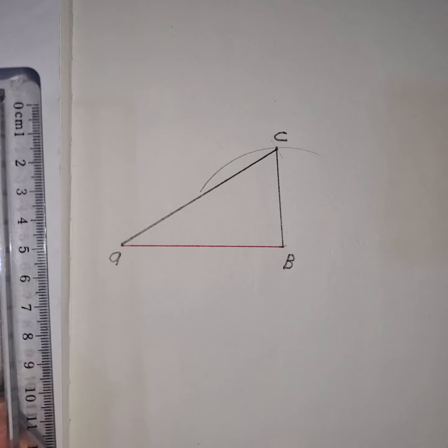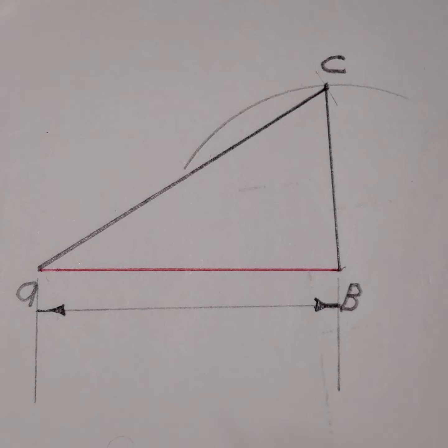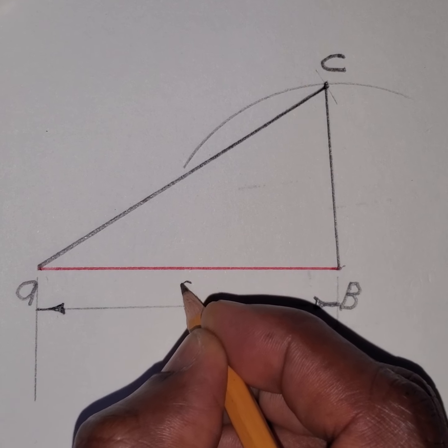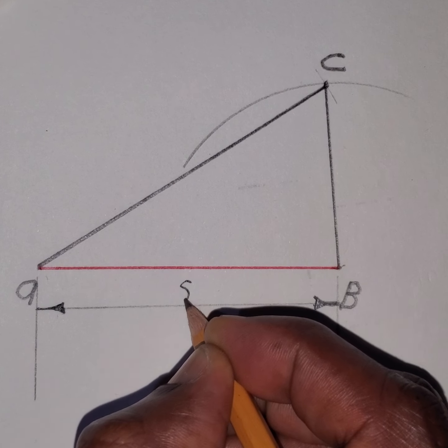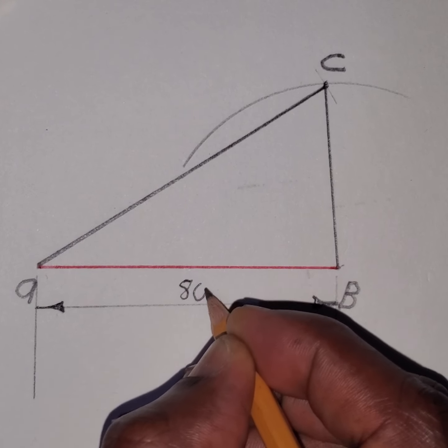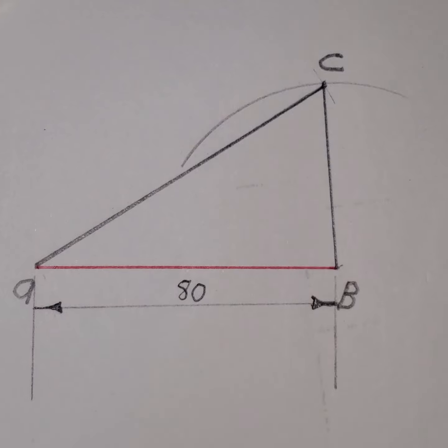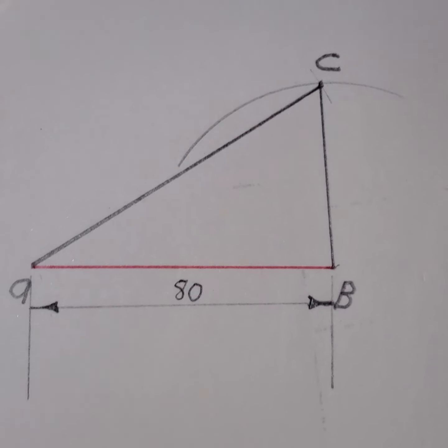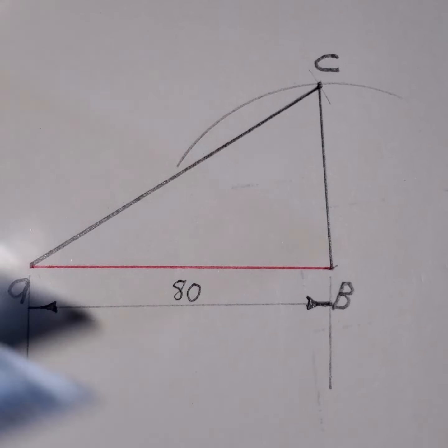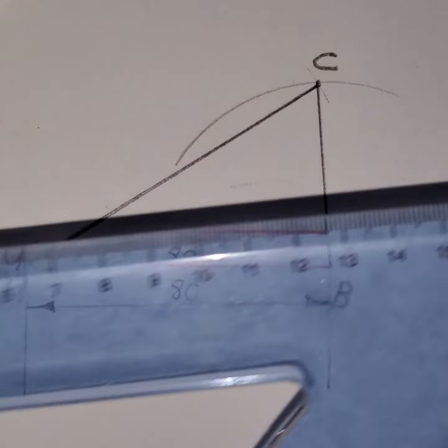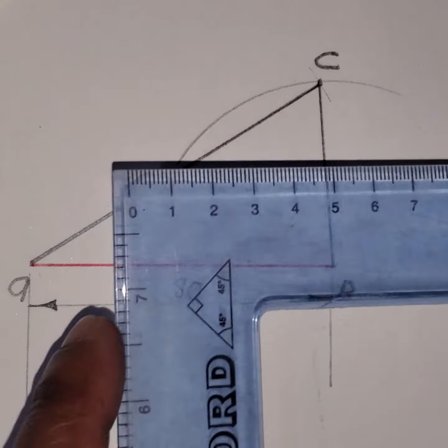Now we need to state the distance. We measure here and measure here — that is 80. So we write 80 here. Then we go to the other side. Again, the first step is to ensure that we align the long stroke on this edge.